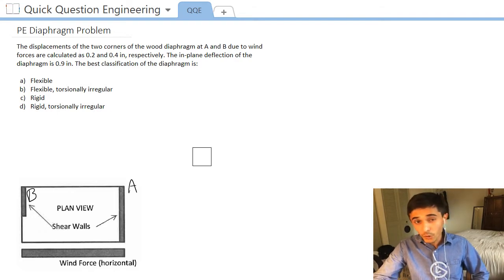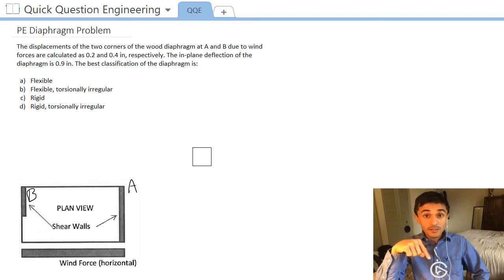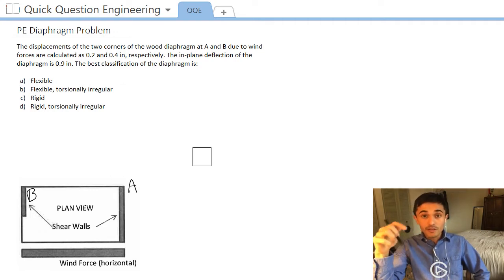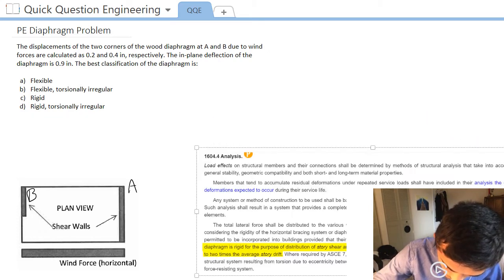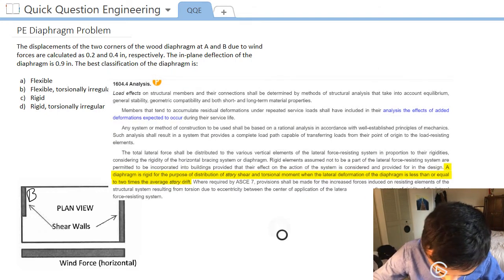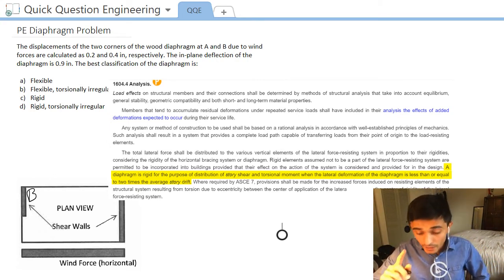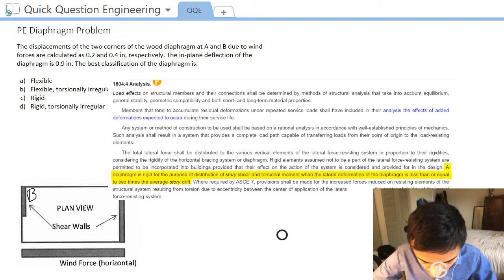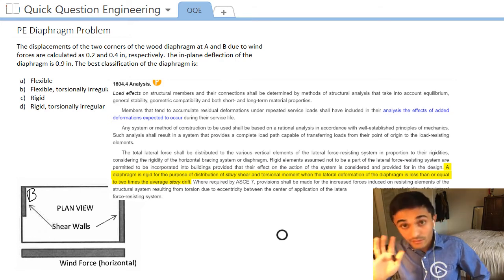So first of all, what does the code say about diaphragm classification? In our case we're going to look into IBC 2018 because that's the code that's referenced in the PE currently. And there is a section here that I'll pull up right here that will explain exactly what that is. So section 1604.4 under analysis states that a diaphragm is rigid for the purpose of distribution of story shear and torsional moment when the lateral deformation of the diaphragm is less than or equal to two times the average story drift.